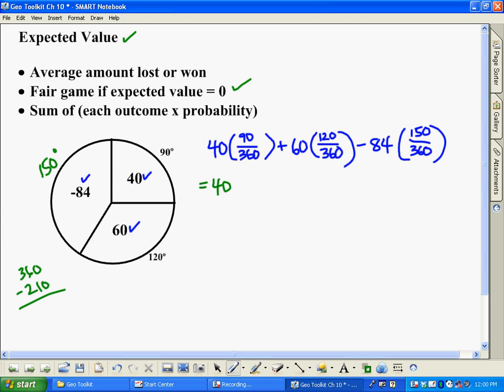So this would be 40. 90 out of 360 is a fourth of the circle. 120 over 360 actually ends up being one-third. So 60, that's one-third. And finally, the negative 84, if I cross off my zeros, I get 15 out of 36. That ends up being five-twelfths. So if you want to simplify and reduce your fractions, go for it. If not, you don't have to. So now grab the calculator.